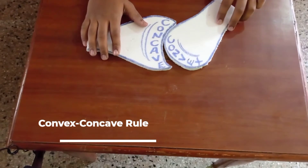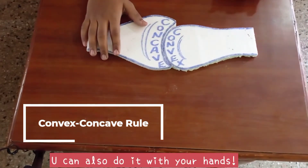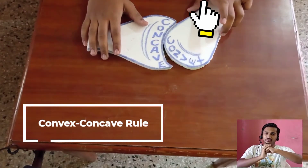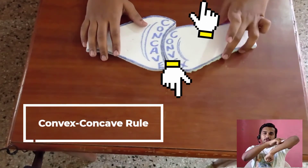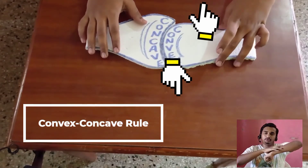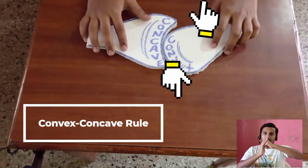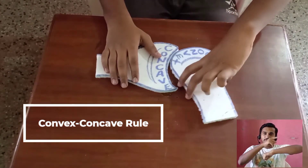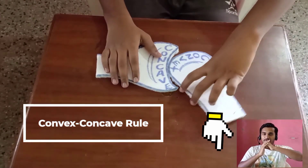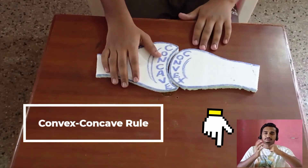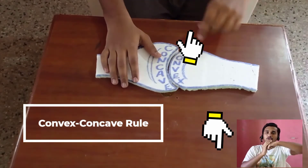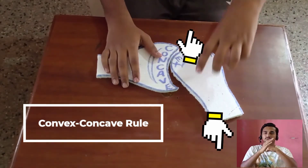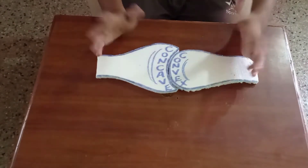When you move the bone in an upward direction in the convex-concave rule, you can see that the osteokinematics is moving upward and the gliding — the arthrokinematics of gliding — is taking place downward. In downward movement, the osteokinematics is moving downward and the gliding is moving upward. So they always move in opposite directions.